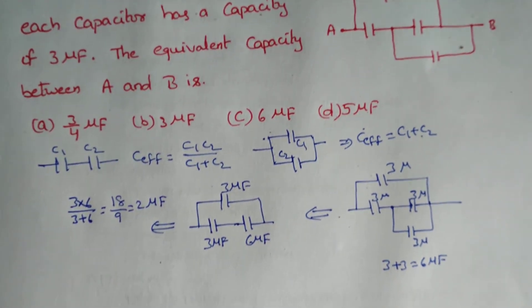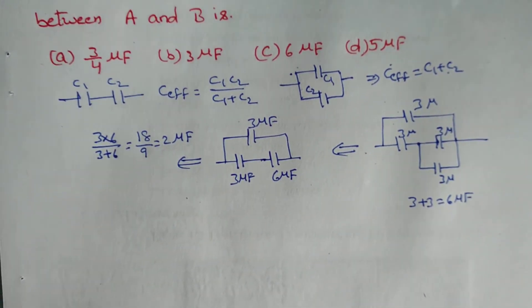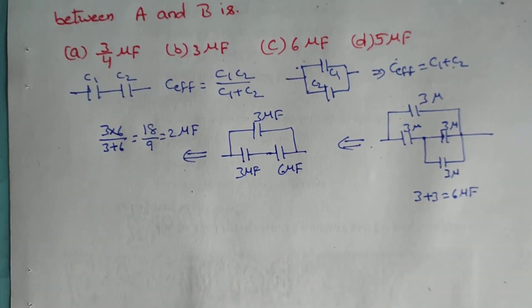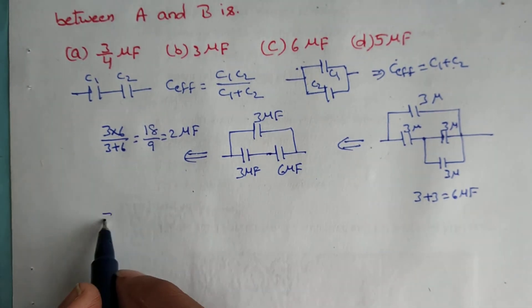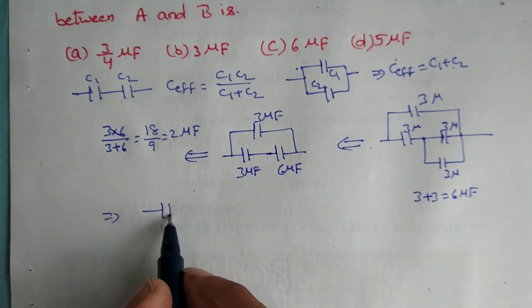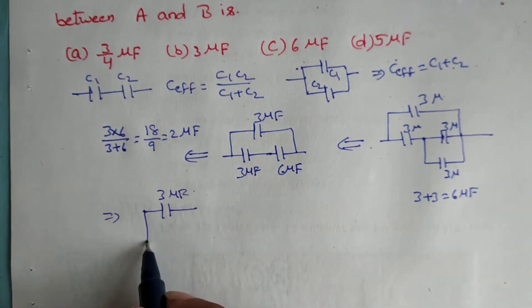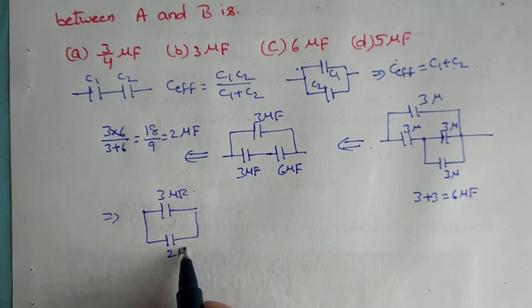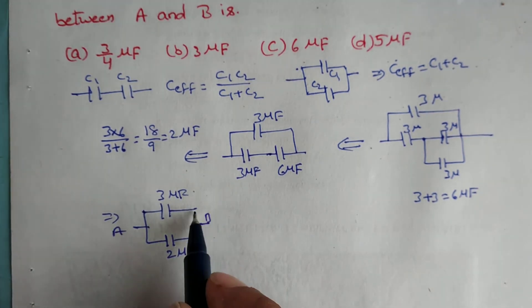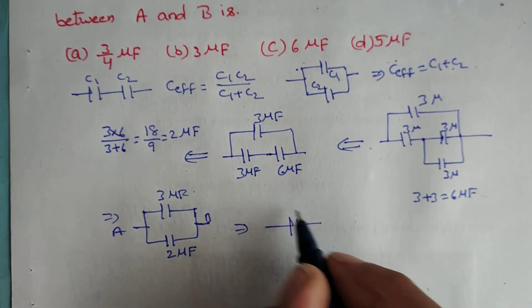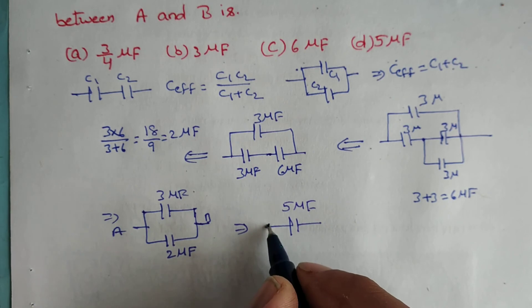Then I am redrawing it as 3 microfarad up I am putting as it is and the 3 and 3 we can get as 2 microfarad. This is A and this is B. If they are in parallel what we do, just we are going to be adding that means 3 plus 2, how much? 5 microfarad.